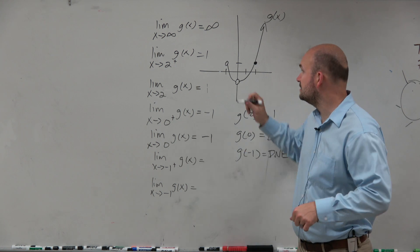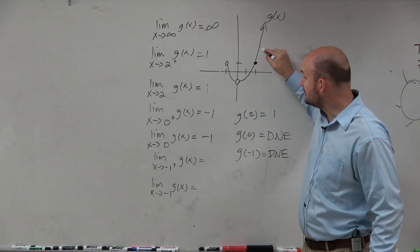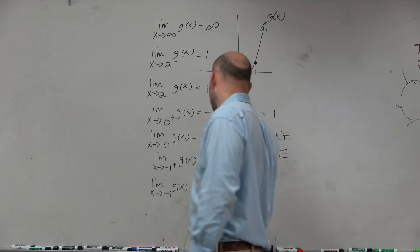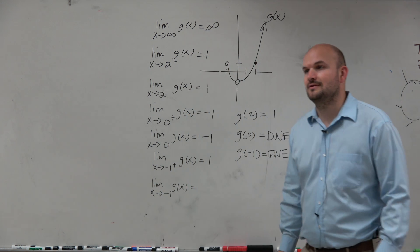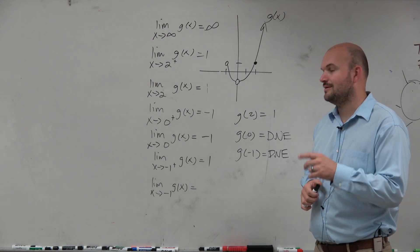So -1 from the right. So now we're going to -1. As we're coming to -1 from the right, from the right hand, we're getting closer and closer to? Positive 1.